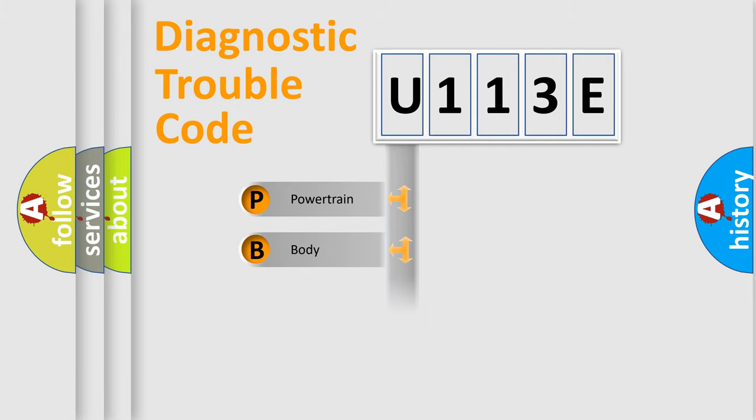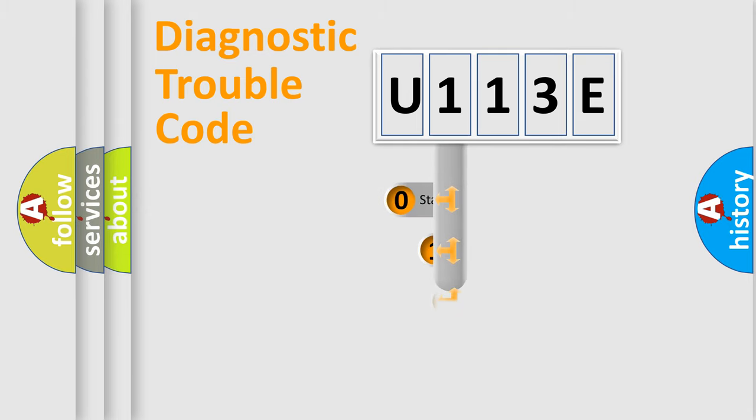Powertrain, Body, Chassis, Network. This distribution is defined in the first character code.